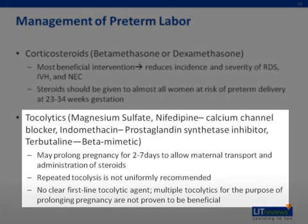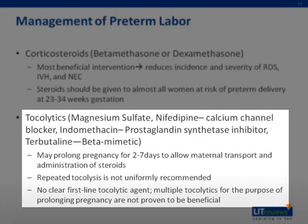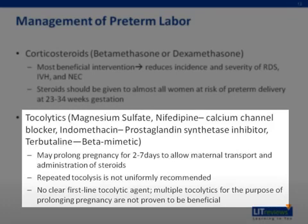Number two is tocolytics. A tocolytic is an agent that aims to stop uterine smooth muscle contractions. The primary purpose of giving a tocolytic in the setting of preterm labor is to abate the contractions enough to allow the administration of the full steroid course and circulatory transport of the steroids to the fetus. Ideally, tocolytics can prolong the pregnancy for up to two to seven days in order to achieve these goals. There are several tocolytics available, but none of them are truly ideal in terms of clinical efficacy or their side effect profile. The agents include magnesium sulfate, nifedipine (a calcium channel blocker), indomethacin (a prostaglandin inhibitor), and terbutaline (a beta-mimetic). Of note, multiple tocolytics for the purpose of prolonging pregnancy are not proven to be beneficial.